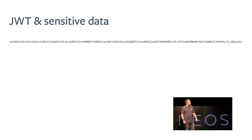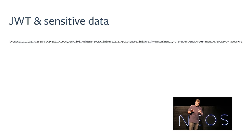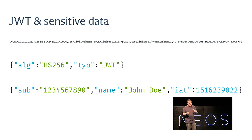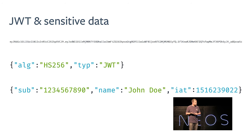This is a complete JWT token written out fully, but there is a problem with it. Because these parts are base64 encoded, everybody can decode them. You must be very careful about what you put into the token, because if you hide sensitive data in it, anyone who has access to the token can read that information out.